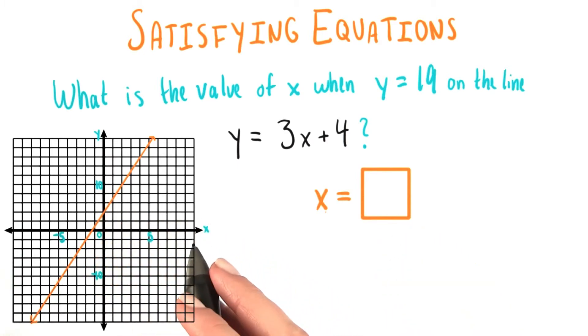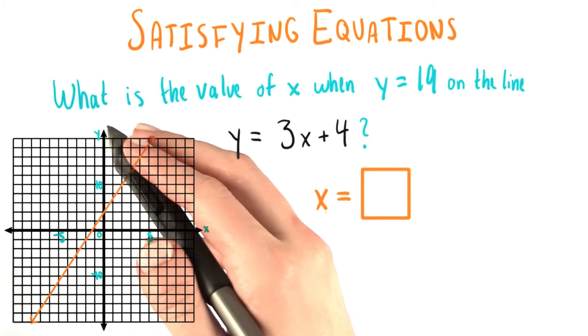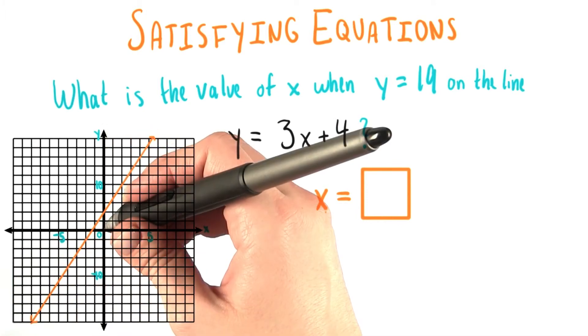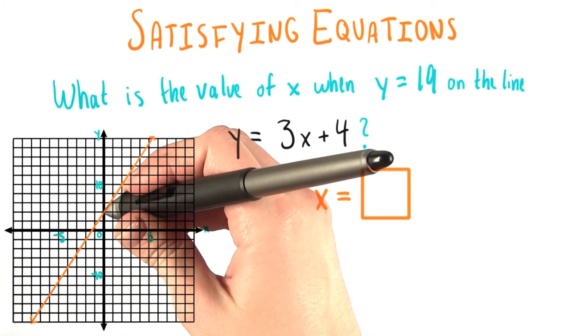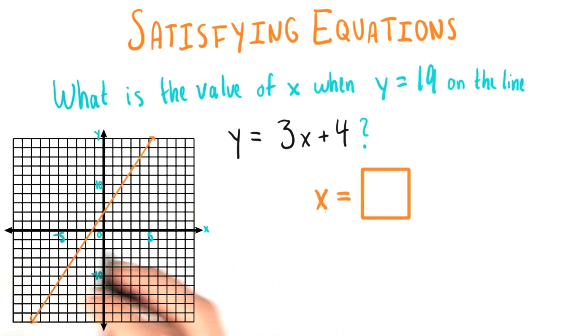Also, please take note of the scale of the x axis versus the y axis. On the y axis, every grid line up counts as 2, whereas on the x axis, it's only 1.